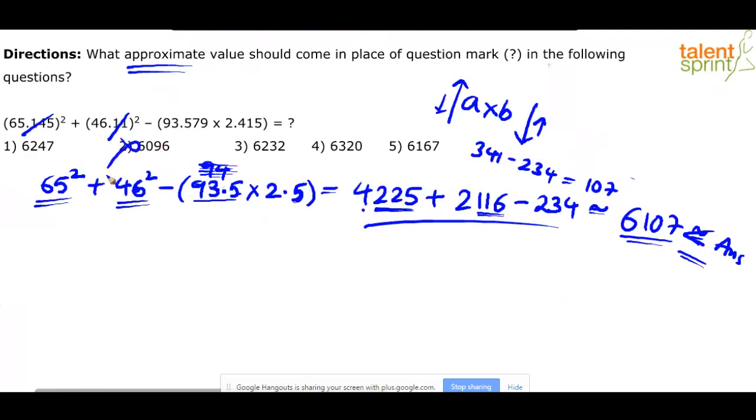So I think we can say 6,096 is eliminated. See, it should be more than 6,107, but it cannot be 6,300. I mean, that's a big difference. These are all big differences. So it looks like approximately 6,167. So I think we should mark 6,167 as answer.